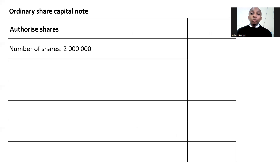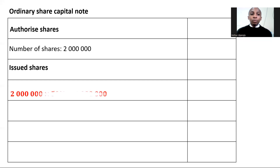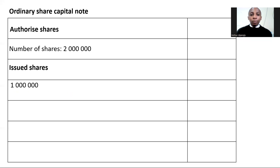The second part will be issued shares - these are shares that you do not have as a company, that are in the hands of the shareholders, and the only thing that you have is the money that you receive as capital from the shareholders. Under issued shares, we will have two million multiplied by 50 percent, which gives us one million - that will be the opening number of shares at the beginning of the year. The balance at the beginning of the year and share capital raised by issuing one million shares will be six million.